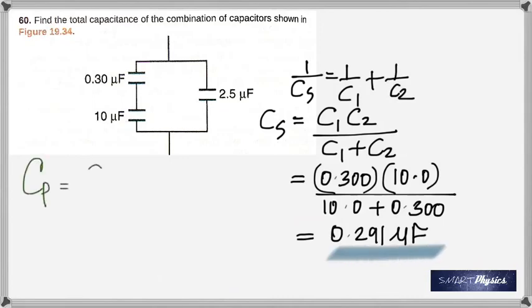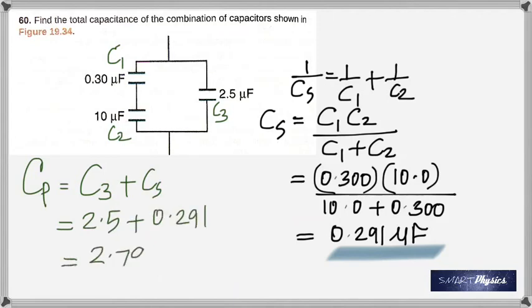And then that combination is in parallel with that, so you just got to add C3 to this. When you add it, you get 2.791 microfarad, which is the answer. That's it. Thank you, and hopefully you understood everything and make good preparation for your exam. Here we go.